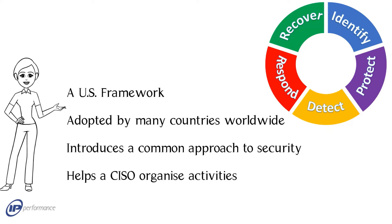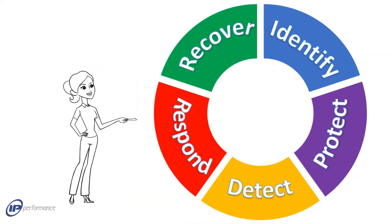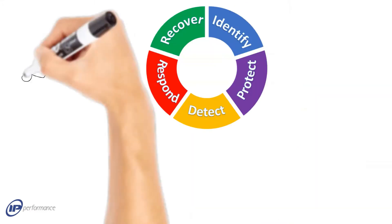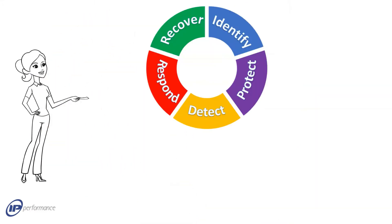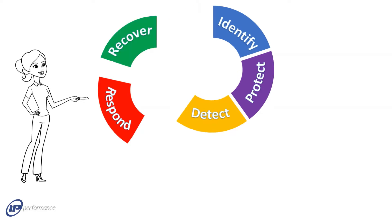The NIST Cybersecurity Framework has five primary functions: identify, protect, detect, respond, and recover. The core elements of both the respond and recover functions are planning, communications, and improvement.